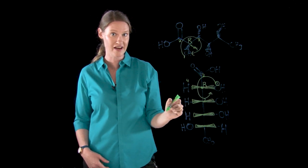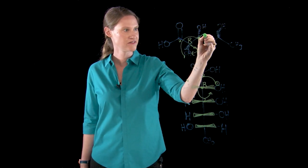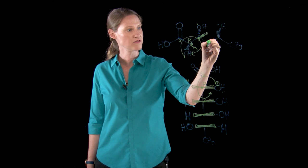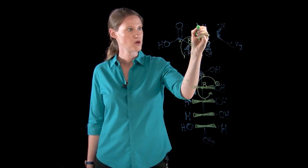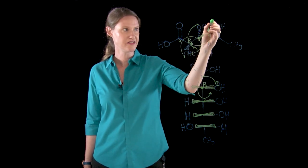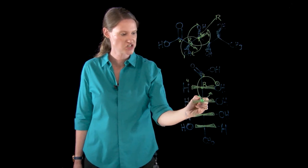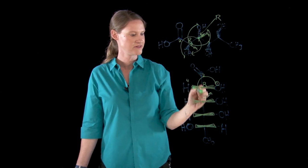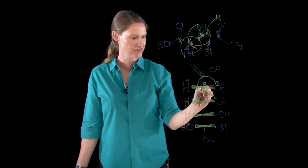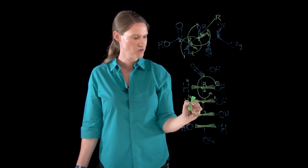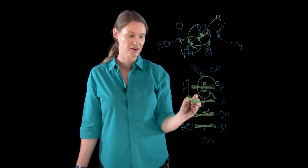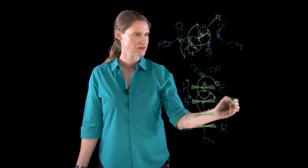Going to the next stereocenter: again the oxygen is there, and there's a hydrogen on a wedge. Oxygen is the highest priority; this carbon is second; this carbon is third; hydrogen is four. One, two, three — it appears to be S, but our hydrogen is on a wedge, so we need to flip it. This stereocenter is also R. Checking against the Fischer projection: this carbon matches — oxygen is one, this carbon closer to the oxygens is two, this is three, hydrogen is four. One, two, three — it appears S. But again, lowest priority is on a wedge, so we flip it — this is showing R, which matches.